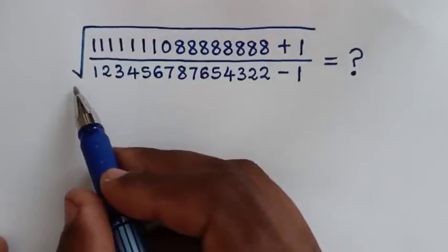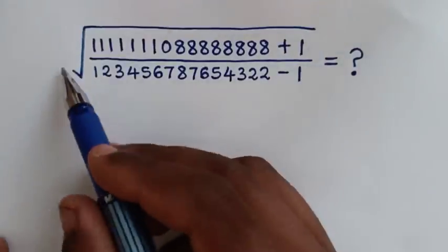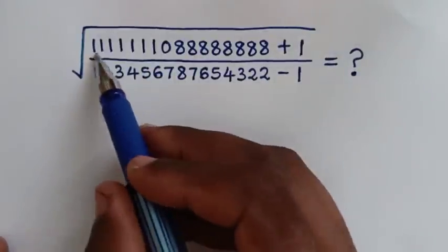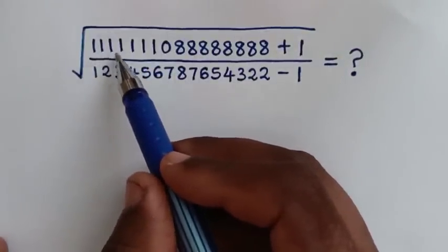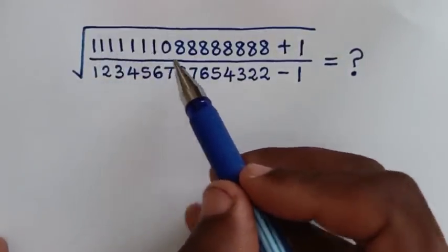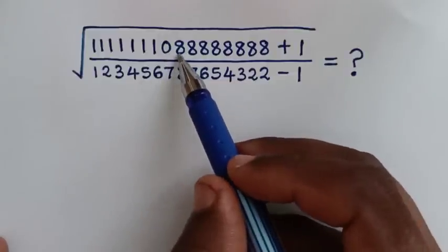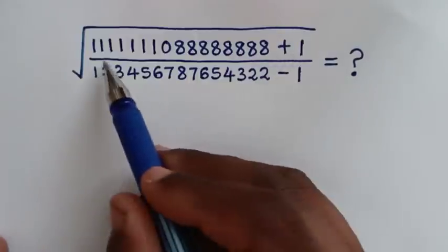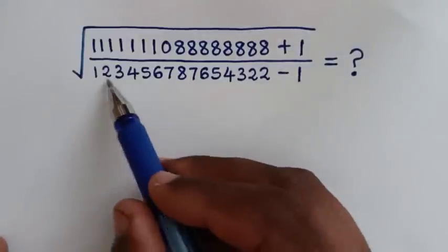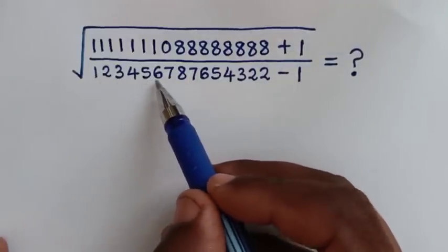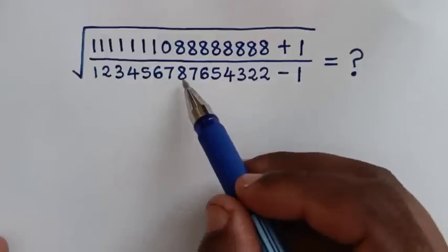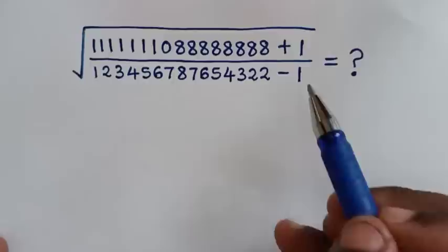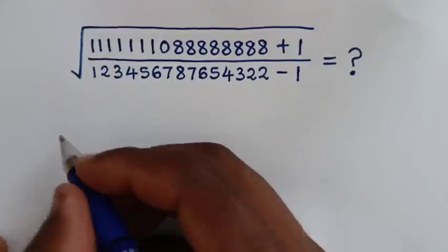Hello, you are welcome. We will solve this math problem to find the value of the square root of a big number: 12345678 then plus one over this big number here — 12345678 — then it is decreasing: 7654322 minus one.